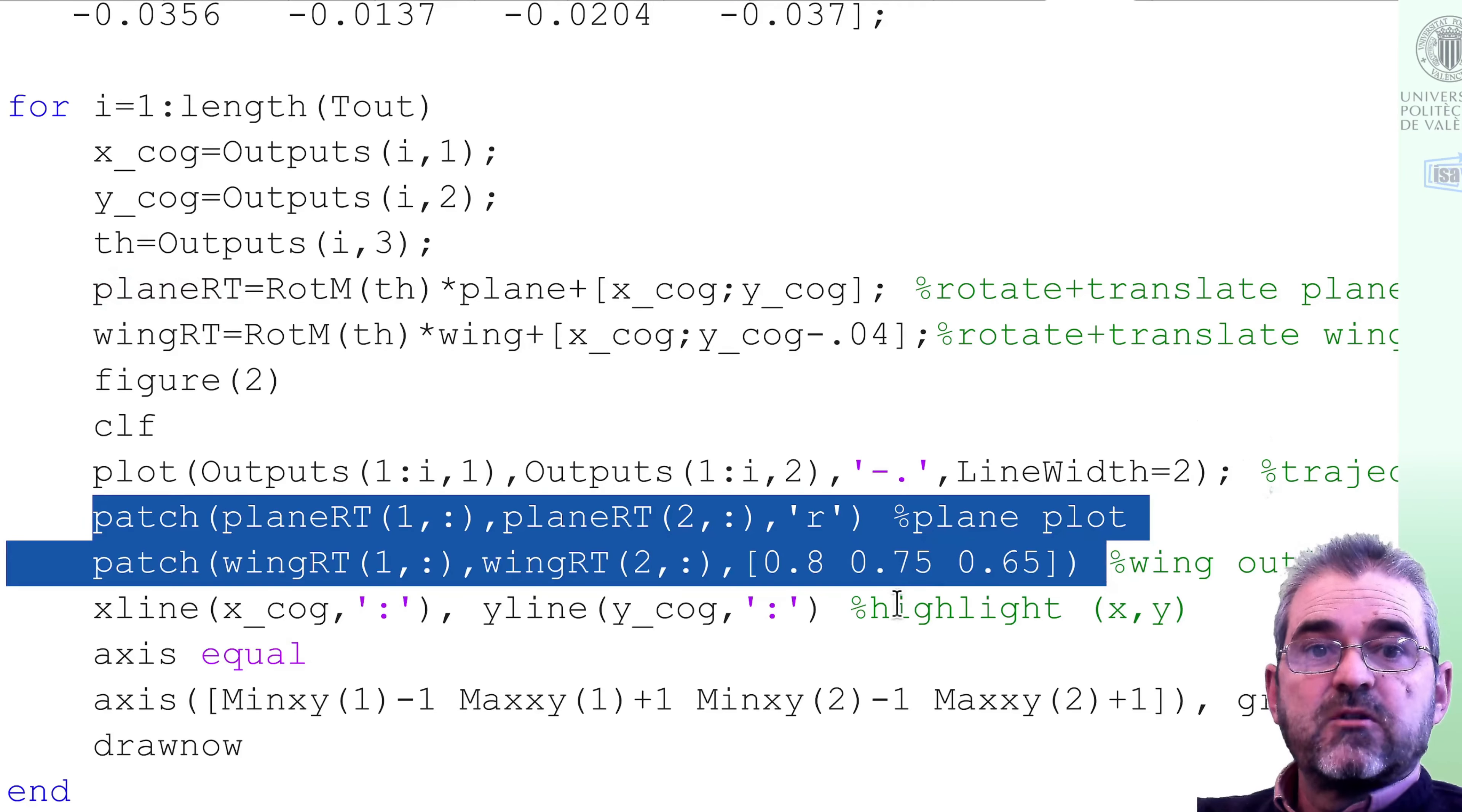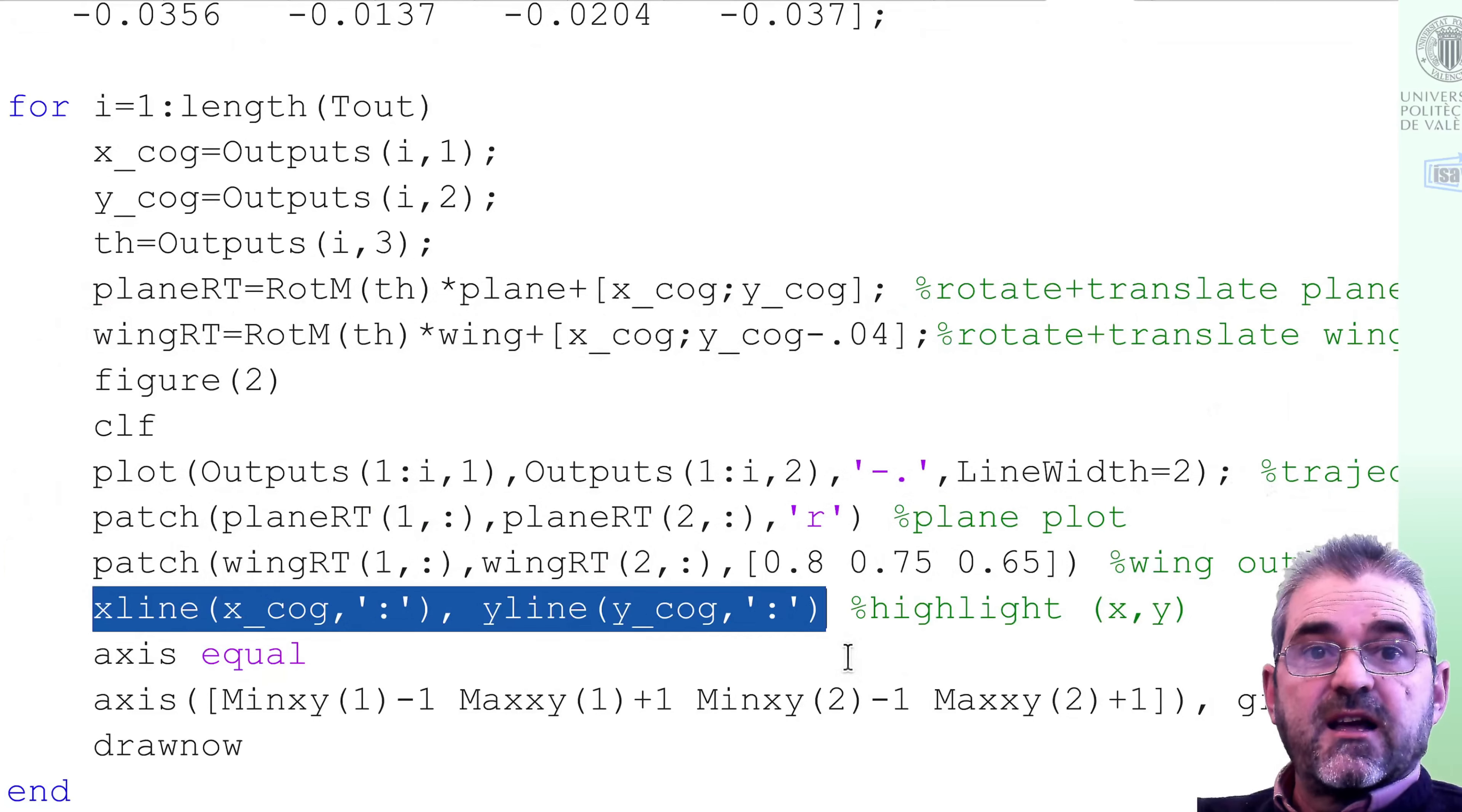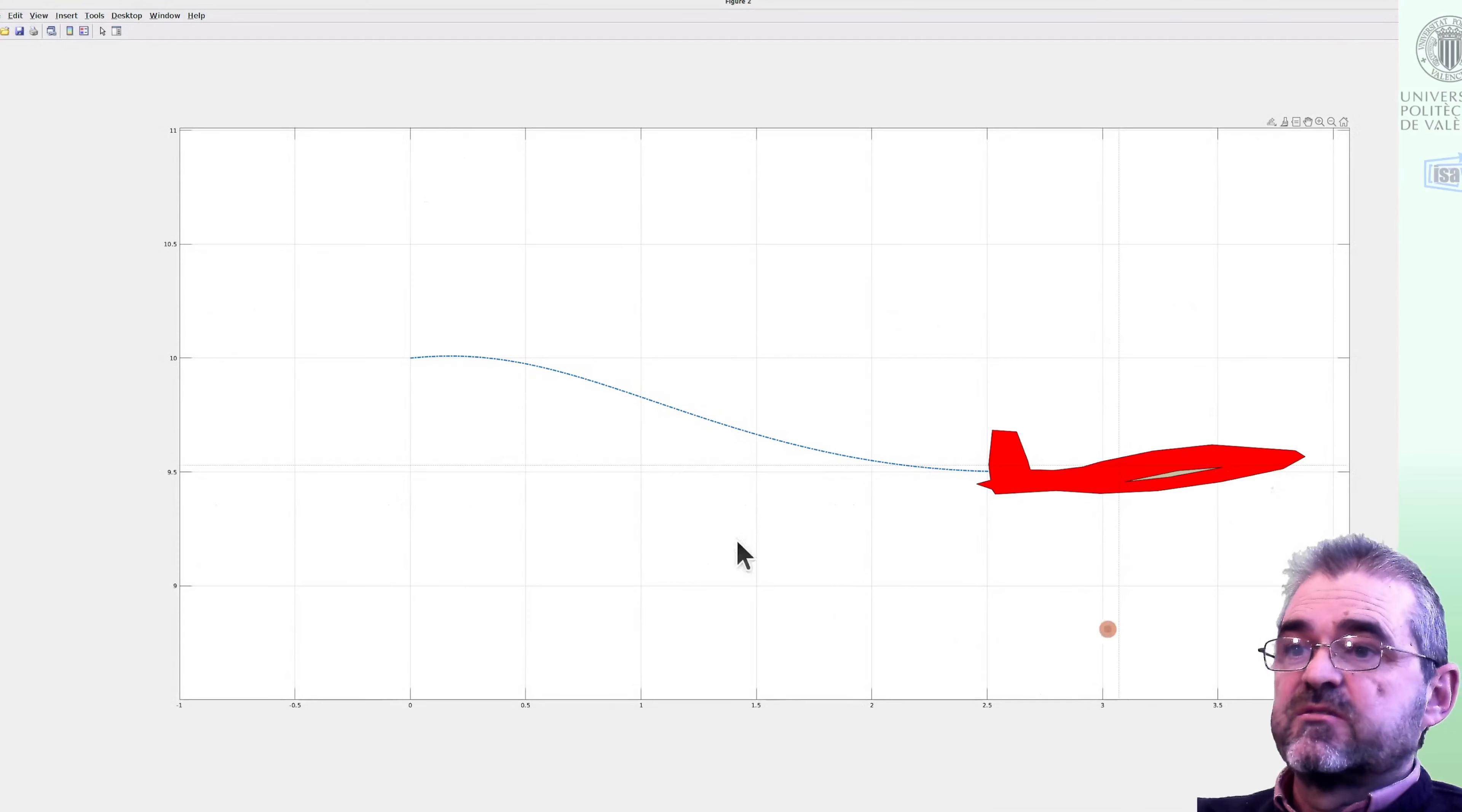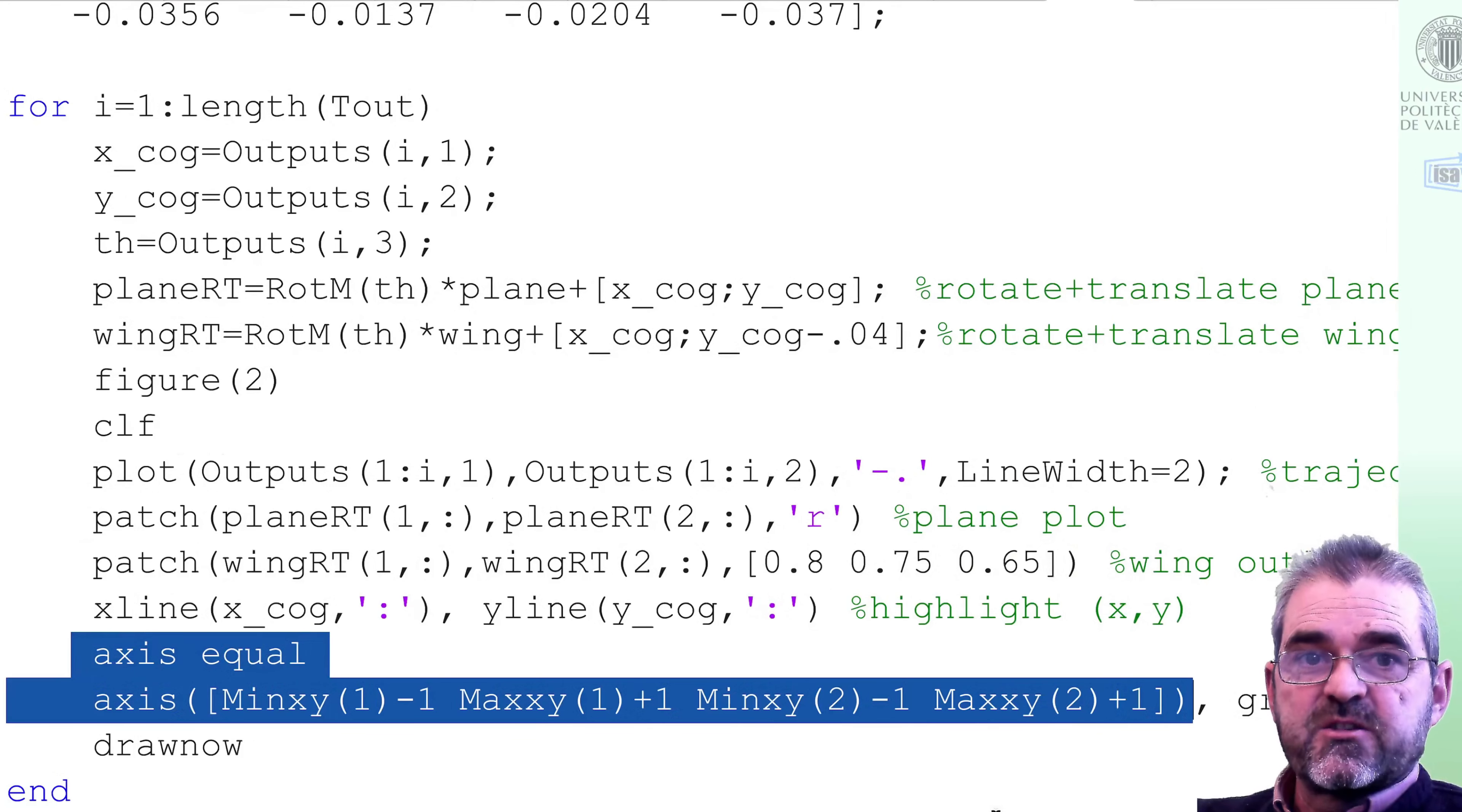And these two patch commands plot the plane and the wing in here. Finally, this x line and y line plot sort of a crosshair horizontal and vertical lines. They are barely noticeable because in my 4K monitor they are extremely thin, but somehow they highlight in here the center of gravity point whose dynamics we are simulating.